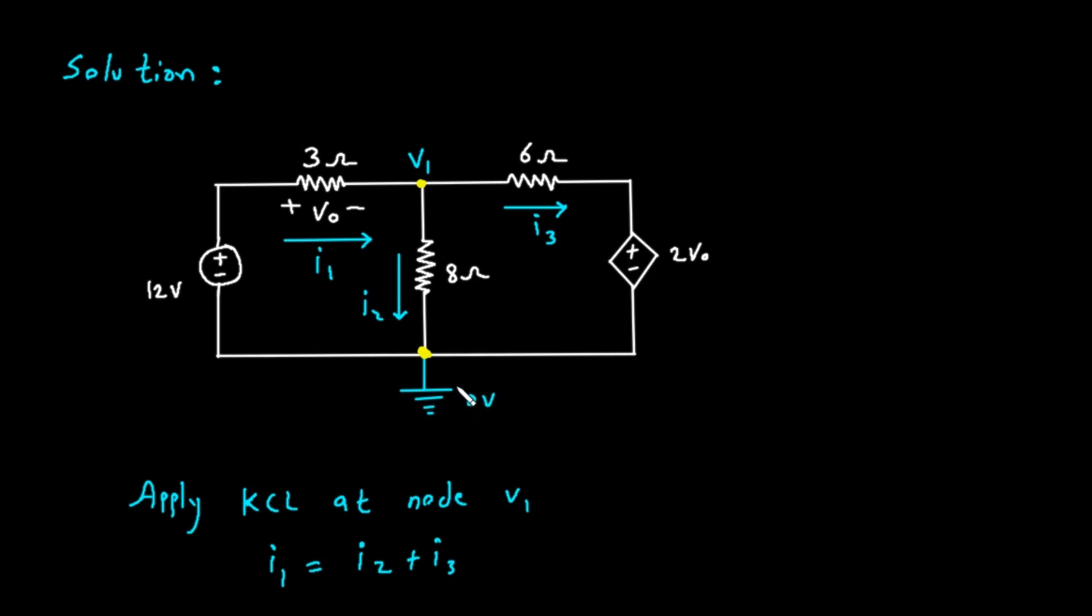There is also a node all along the bottom wire. We choose one of these nodes to be our reference node or ground. This node is defined as having a voltage of 0 volts. We will choose the bottom node as our ground. Now, we label the voltage at the other main node. We will call the top node V sub 1.